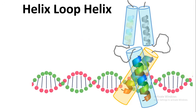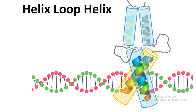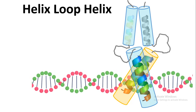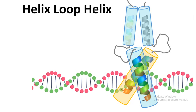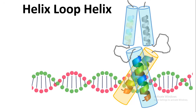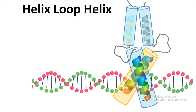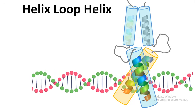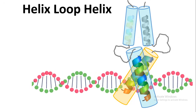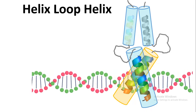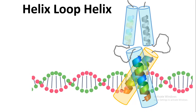Another important DNA binding motif is the helix-loop-helix. As the name suggests, there are two helices connected by a loop. These helix-loop-helix-containing transcription factors can form homodimers or heterodimers. In this example, it has been shown that they are forming a heterodimer.